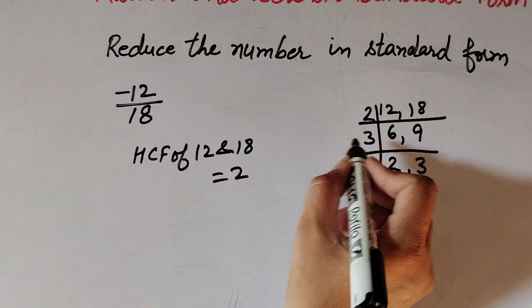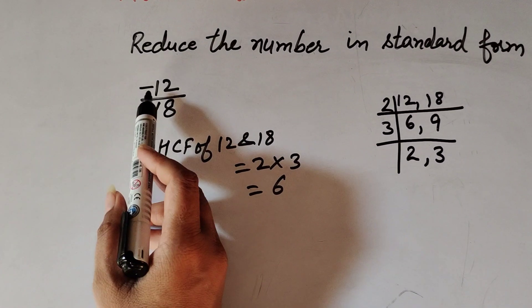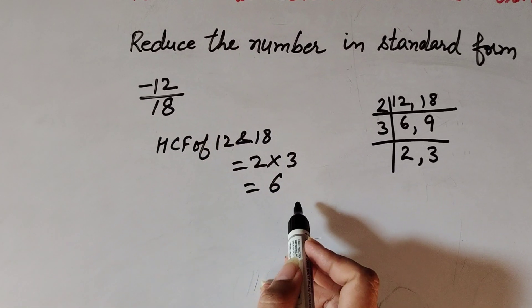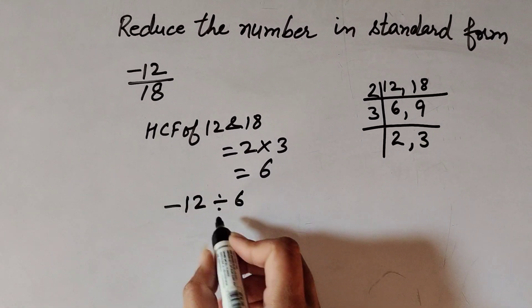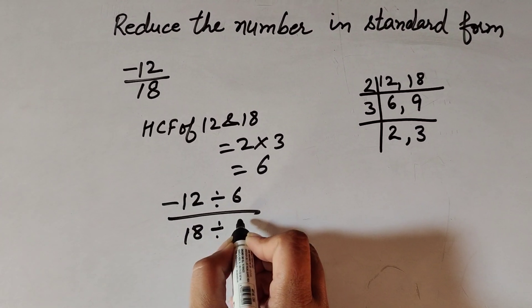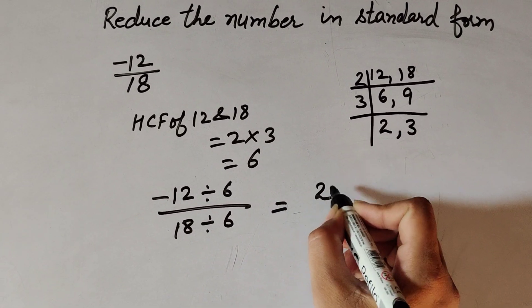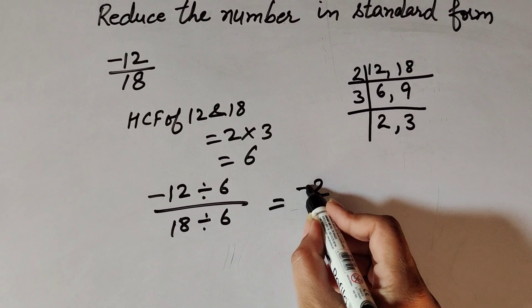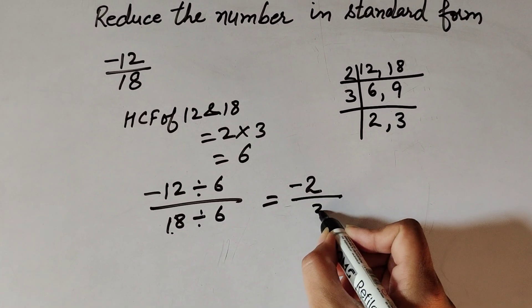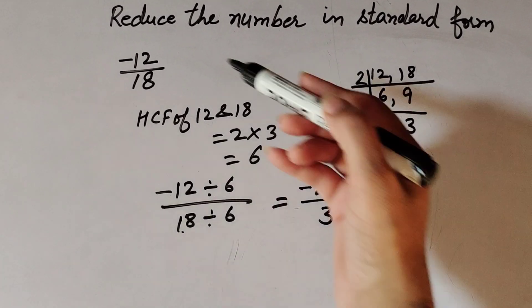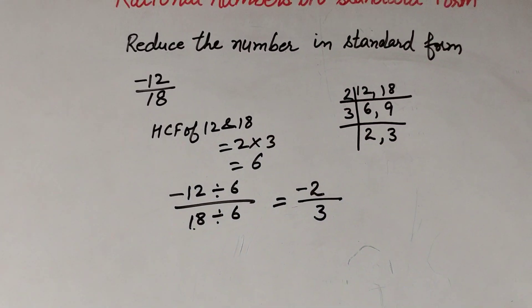We divide numerator and denominator by 6. -12 divided by 6 gives -2, and 18 divided by 6 gives 3. So -2/3 is the standard form of -12/18.